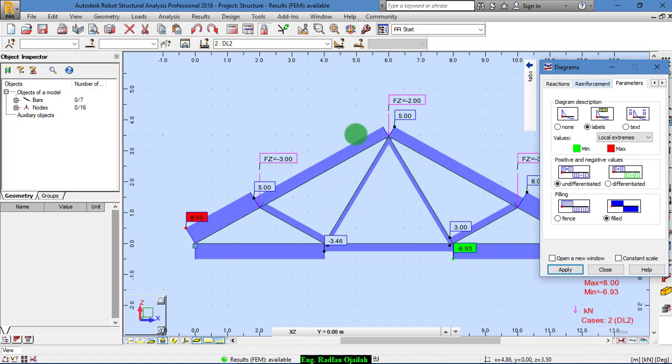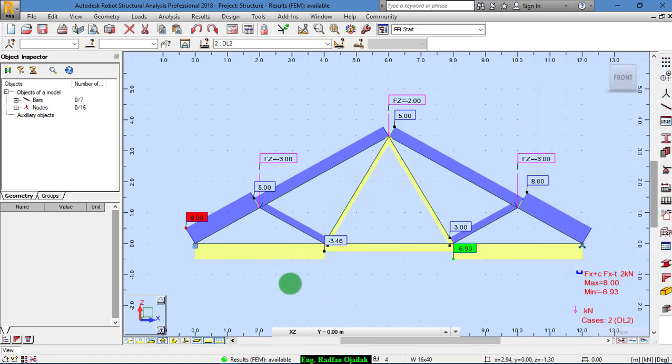From this diagram we would not know whether they were in tension or in compression, so click on differentiated and then apply. As shown here, the yellow one is the tension and the blue one is the compression.